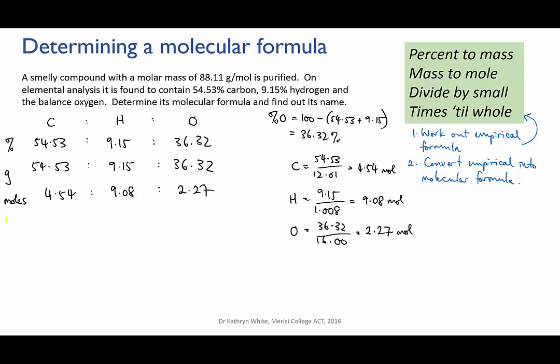Which gives me a mole ratio of 4.54 moles of carbon to 9.08 moles of hydrogen to 2.27 moles of oxygen.